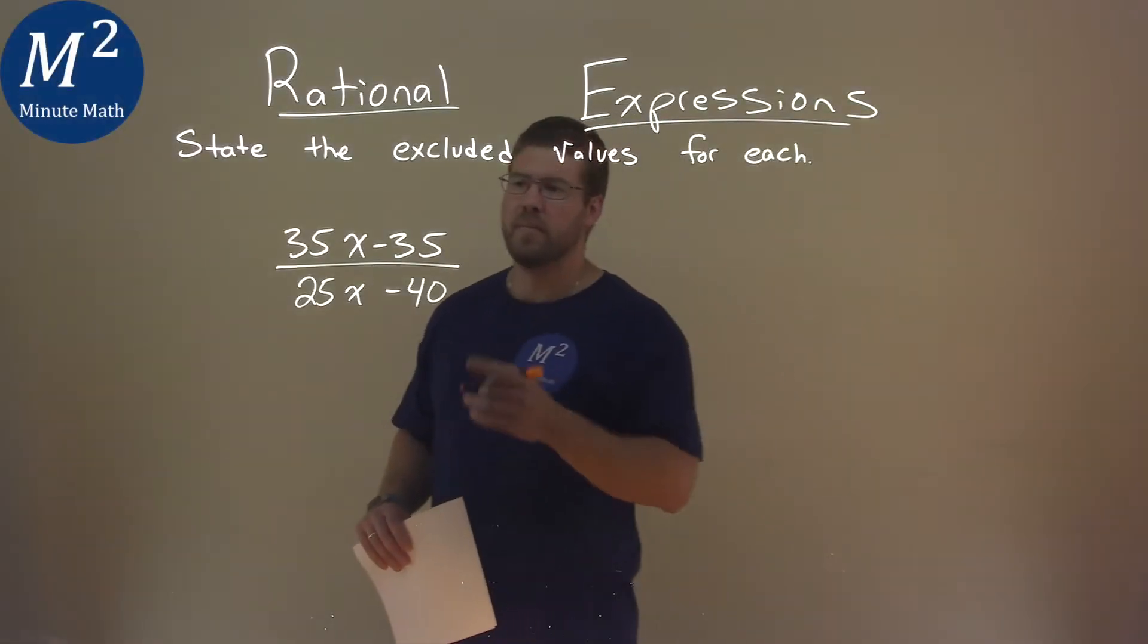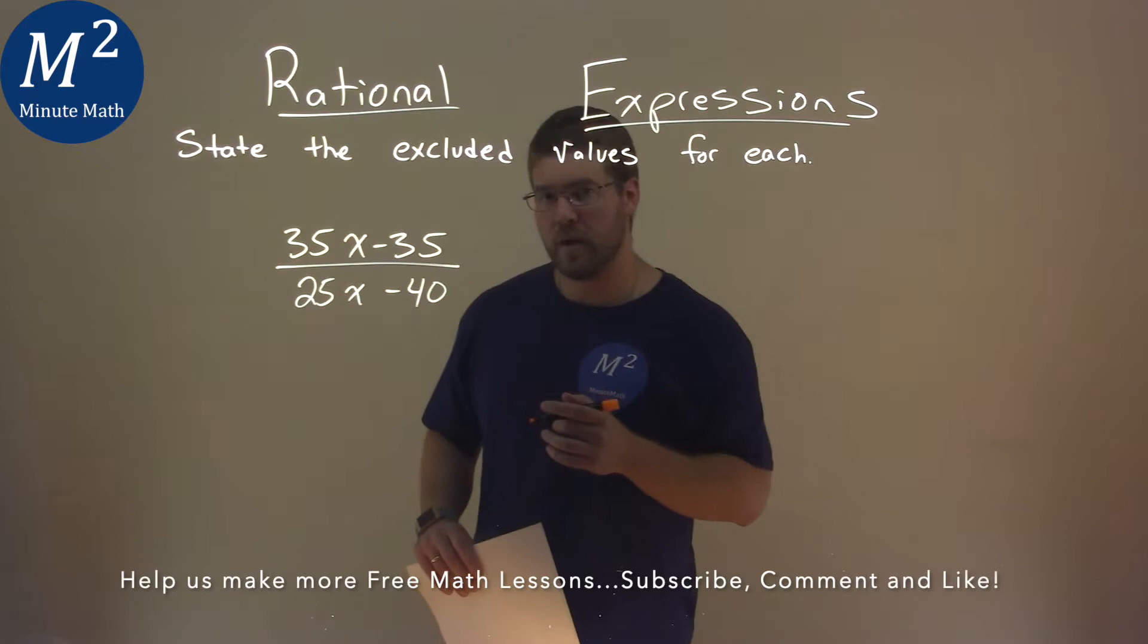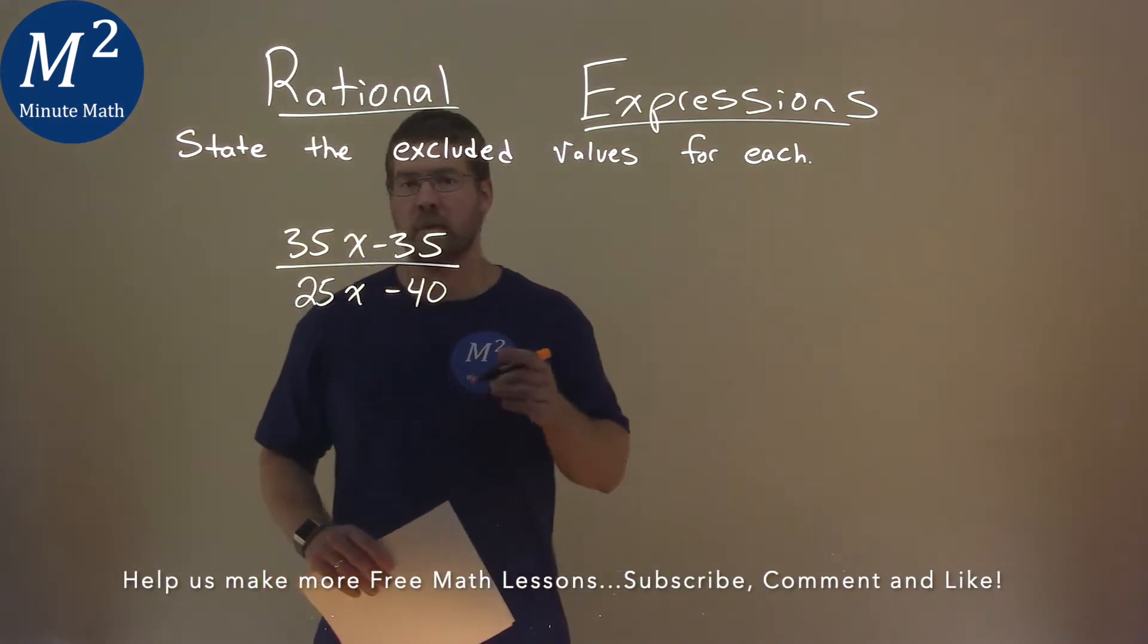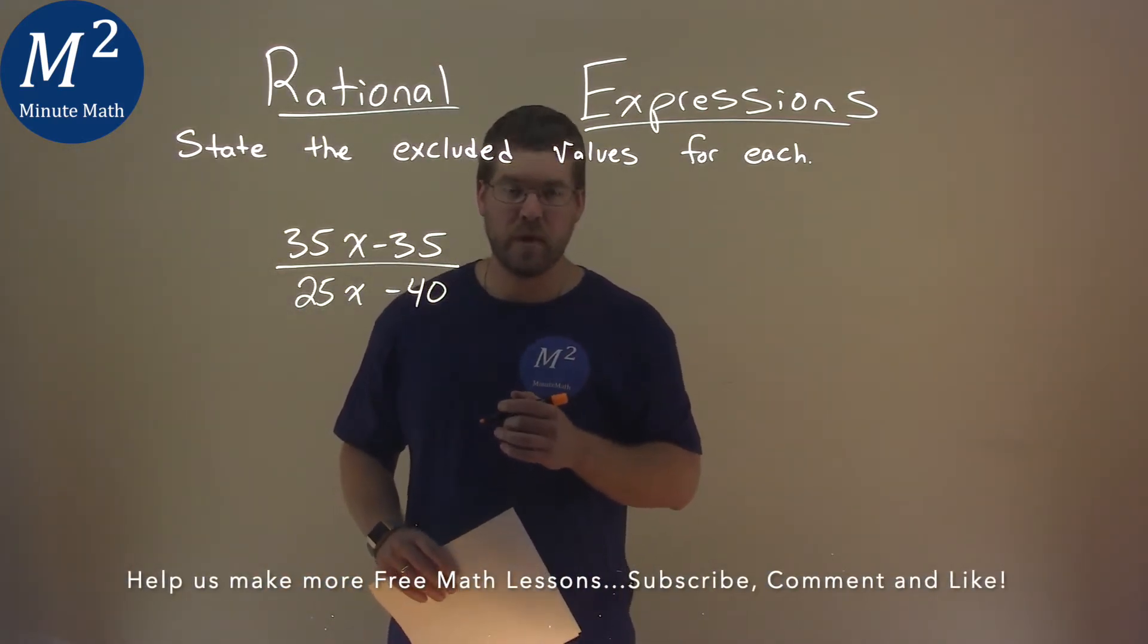We're given this problem right here, 35x minus 35, over 25x minus 40, and we need to state the excluded value.